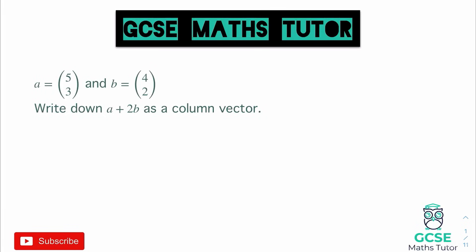The first question we're going to look at is here on the screen. We've got vector A which is 5 over 3 and vector B which is 4 over 2, and it wants us to write down A plus 2B as a column vector. The process to go about doing this is quite nice and simple, but it's important to understand why we go about the process we do and how it works.